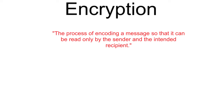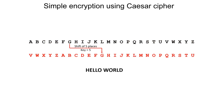Encryption is simply the process of encoding a message so that it can be read only by the sender and the intended recipient. Encryption has been around for as long as we have been producing written communications. One of the first forms of encryption was the Caesar cipher — a very simple form of encryption that replaces each letter of the alphabet with another some fixed distance along.